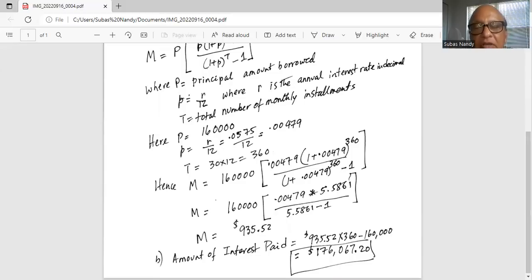What is the total amount of interest paid over the life of the loan? Remember, the monthly payments are $935.52. Multiply that by 360 to get the total of the monthly payments, minus the amount we borrowed, $160,000.